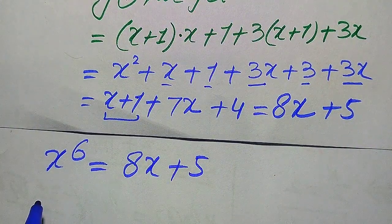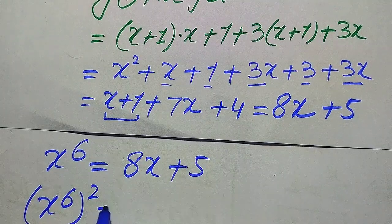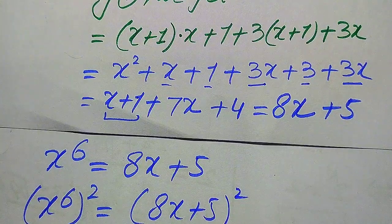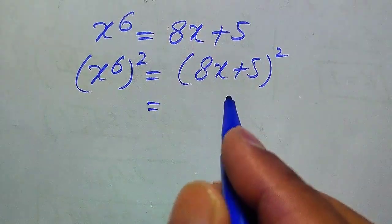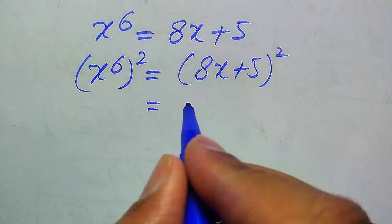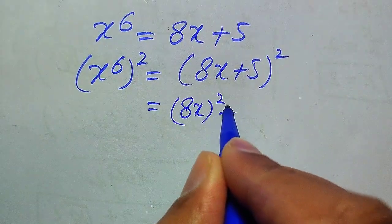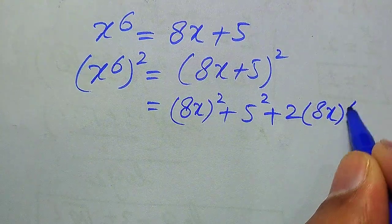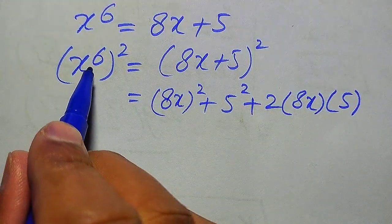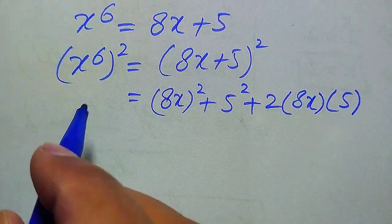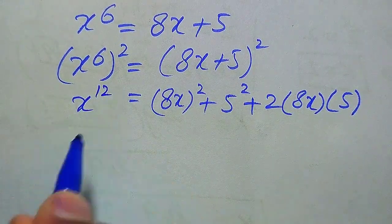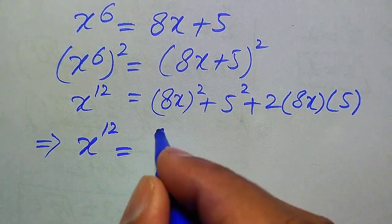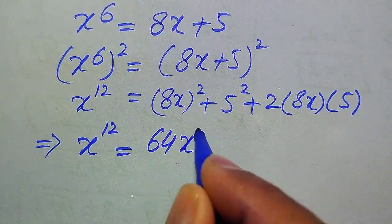Our target is to get the value of x to the power of 12, so we take squaring on both sides of x⁶ equals 8x plus 5. In the right-hand side we apply the algebraic formula (a + b)² = a² + b² + 2ab, giving (8x)² plus 5² plus 2 times 8x times 5. On the left-hand side the exponents multiply, giving x to the power of 12.